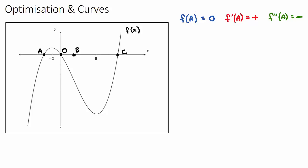Let's go through the other points more quickly. f(-2) means when x is negative 2, what is the y value? It will be positive — up here. Now f'(-2) means what is the slope when x is negative 2. The slope will be 0 — it's a maximum. And f''(-2): at this point, it is still part of the negative concavity, so it will be a negative value.